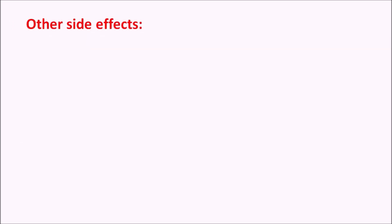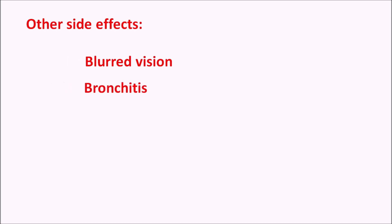Other side effects of alpha blockers mainly include upper respiratory tract infections such as bronchitis and pharyngitis. They can also produce constipation by reducing gastric motility.